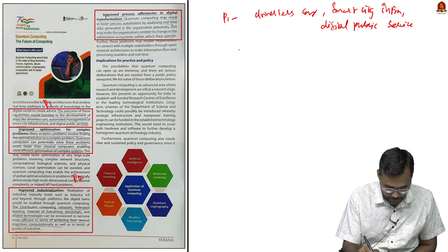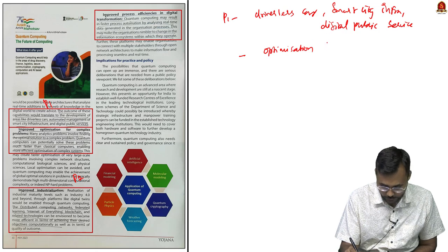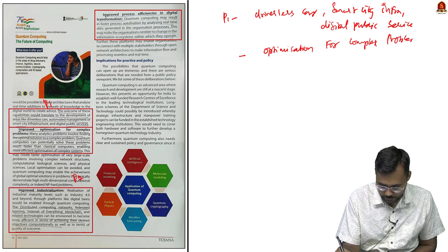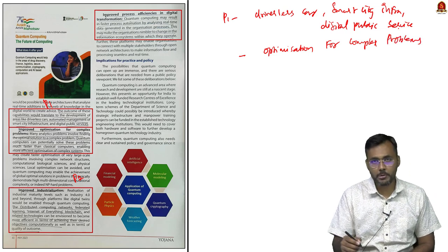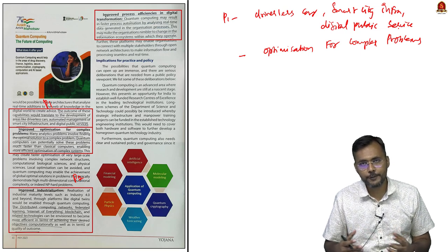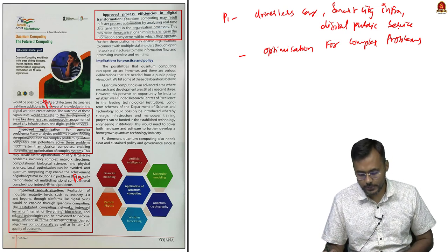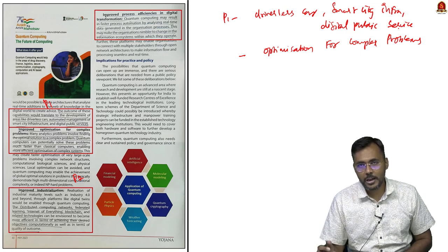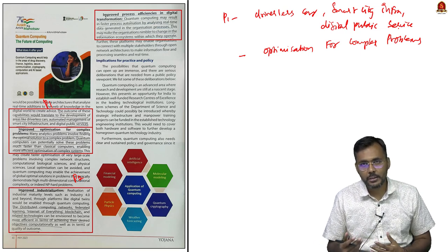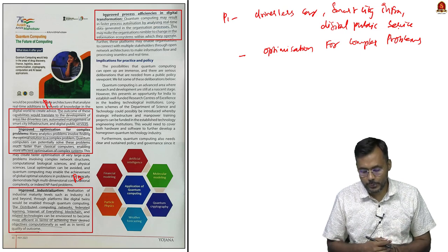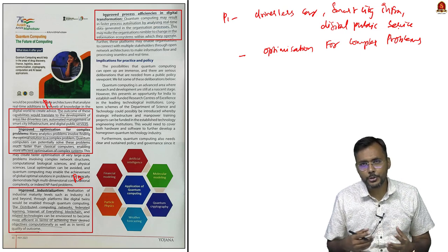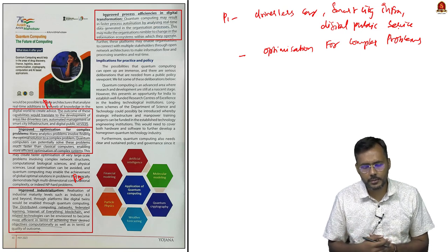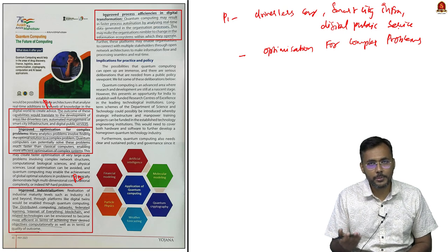The second point in paragraph 1 is optimization for complex problems — finding the best solution for a complex problem through very fast calculations. For example, if river pollution is happening, quantum computing can identify what the impact will be on the ecosystem, considering the complex ecology and human factors involved.